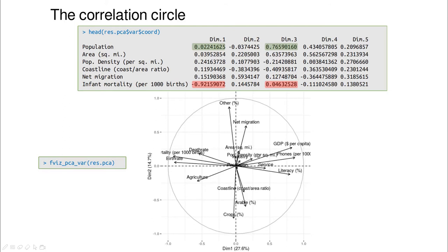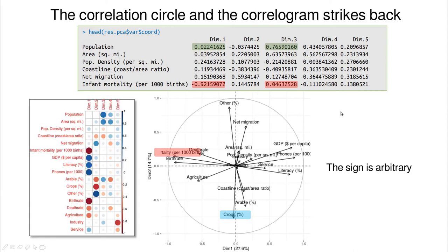Visually, you can get the same information from the correlation circle plot. The horizontal axis is the first principal component and the vertical axis is the second. Mortality per thousand births is negatively correlated with the second dimension — that's a negative coefficient close to one (the closer to the circle, the stronger the correlation). Crops, for instance, is strongly negatively correlated with the first dimension. Note that the sign is arbitrary since principal components are dimensionless — negative doesn't mean bad. You can also use correlograms where the larger the circle the more correlated, blue means positively correlated, and red means negatively correlated.